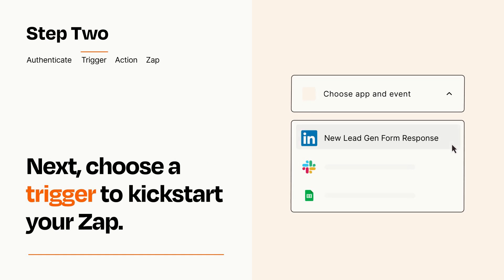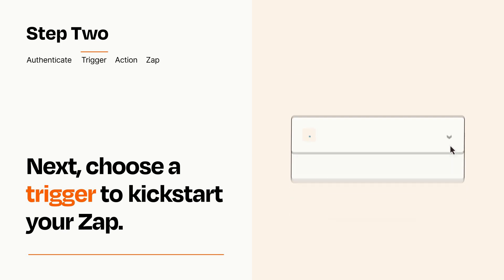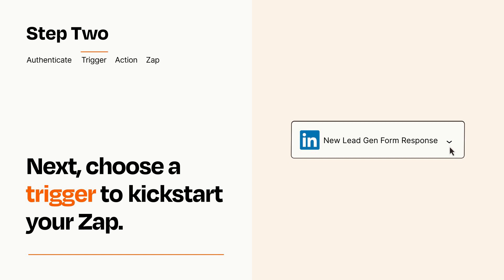Now let's set up your trigger, which is the event that starts your Zap. Pick the trigger event that you want from the list. When you set up this step, your Zap will pull in test data from your trigger app that you'll see later when setting up your action app.